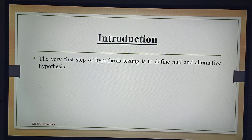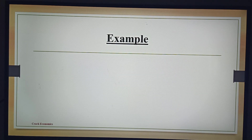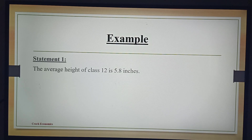So, what do we mean by null hypothesis? A null hypothesis is a statement or a prevision about a population parameter that is assumed to be true. Let us understand the idea of null hypothesis with the help of an example. Suppose we have this statement: Statement 1 is the average height of class 12 is 5.8 inches.